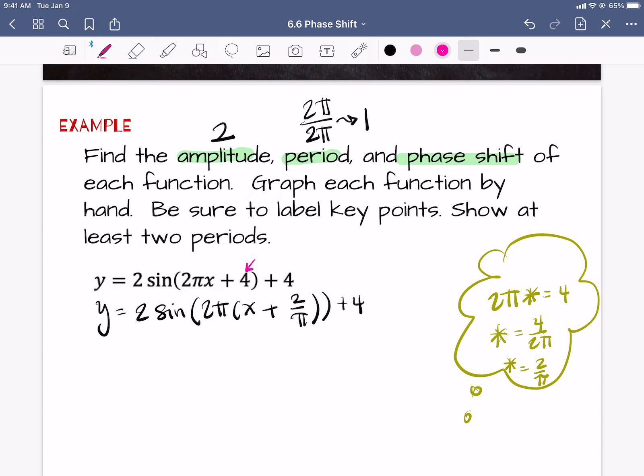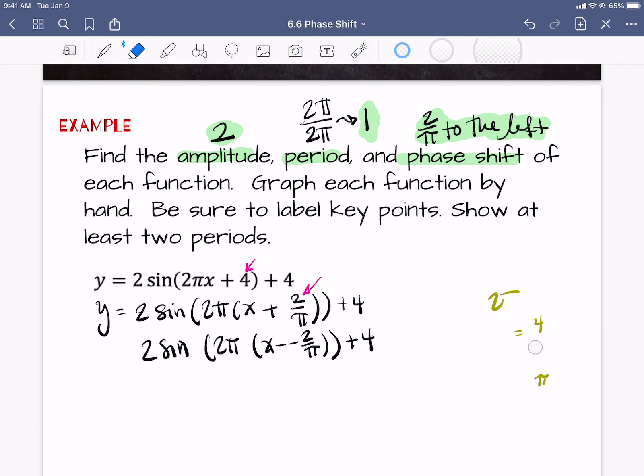The phase shift, this is why we factored it out, the phase shift is this guy right here. So negative, or you can say 2 over π to the left. It is negative 2 over π, negatives go to the left. So we have our amplitude, we have our period, and we have our phase shift.